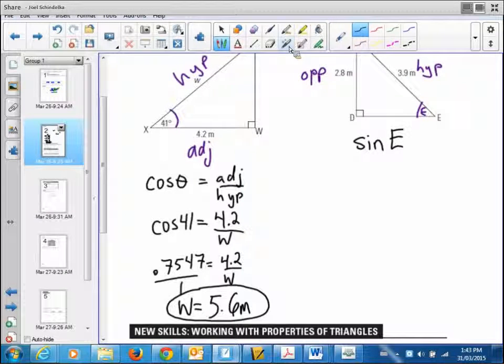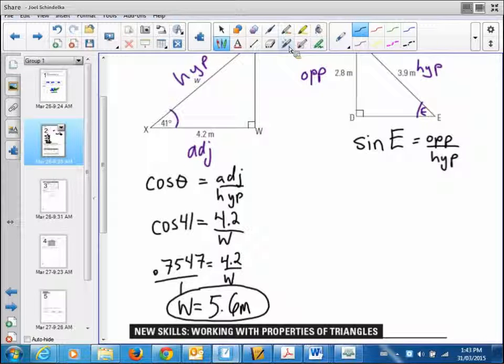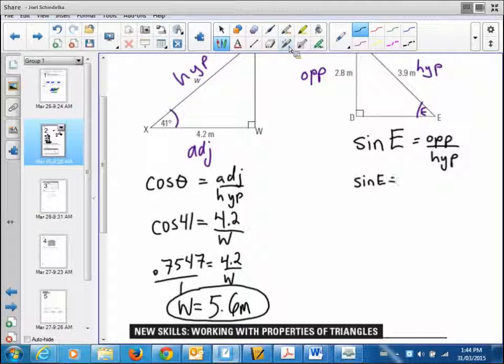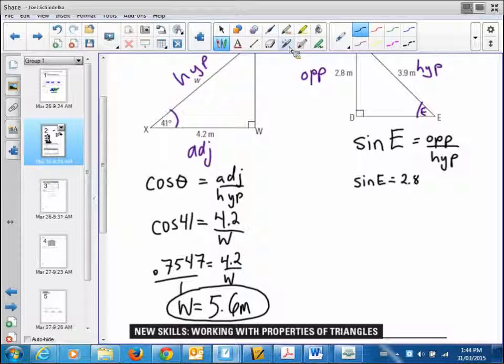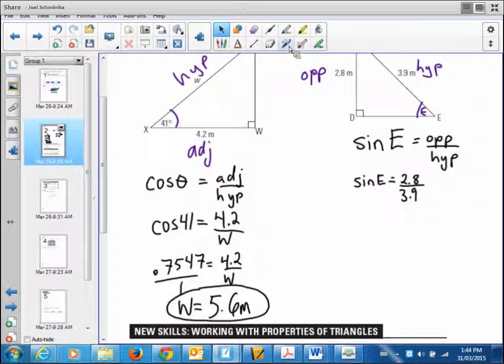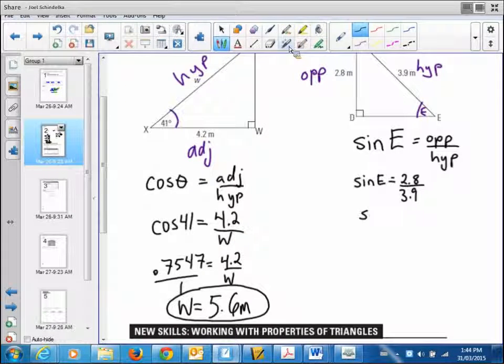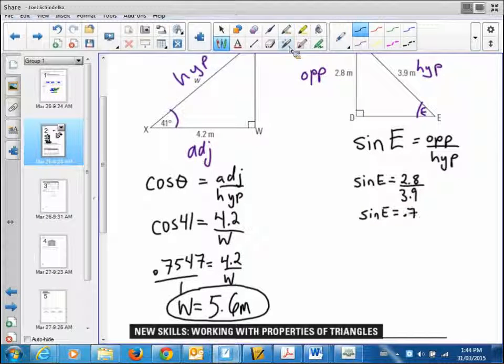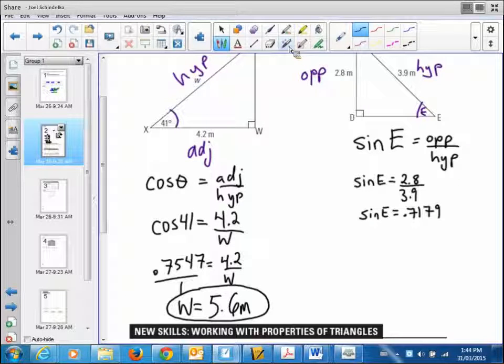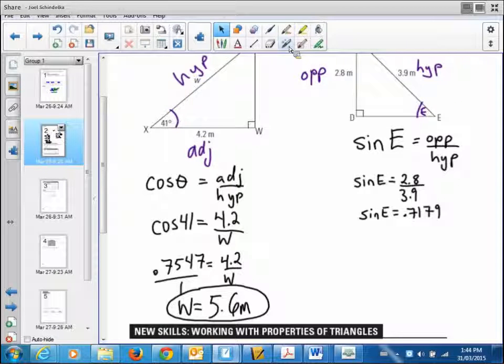The opposite over the hypotenuse. I can actually then find sine of E is equal to: opposite is 2.8, the hypotenuse is 3.9. They're matching units. You can just do that. And then you can actually type that in and crunch it out. 0.7179 if you divide 2.8 divided by 3.9. Do you guys remember how you undo this? How you find the angle inside there? Because there's no division. Do you remember how you undo this on your calculator?